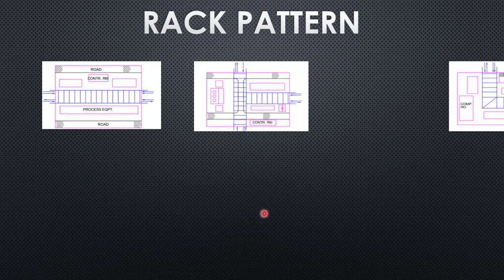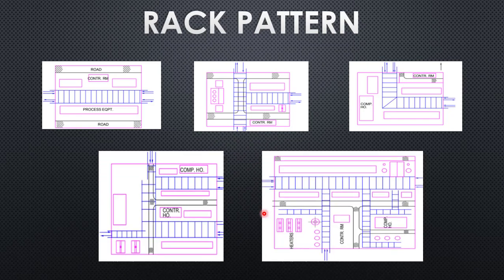Now we'll see the different patterns available in pipe rack. These patterns are suited based on the layout and the plot available. It could be a straight pipe rack, a T-shaped pipe rack, or an L-shaped pipe rack, and it could also be of different shapes. All of these shapes and routes are based on the specific layout and requirements of the plant. The pipe can enter from one location and exit from another, or enter and exit from multiple locations.